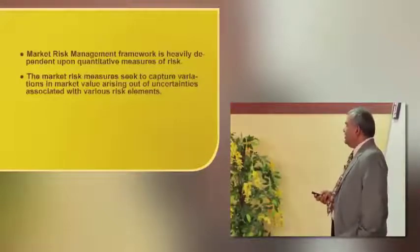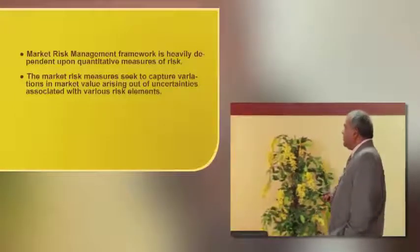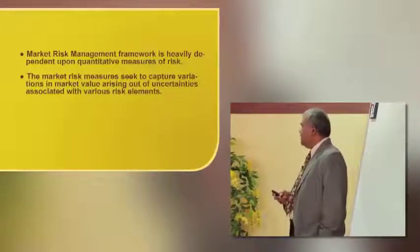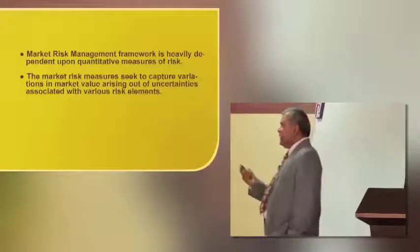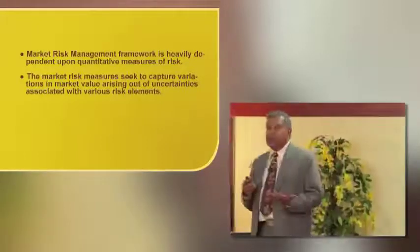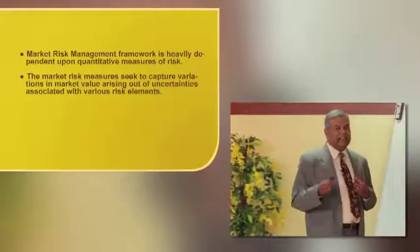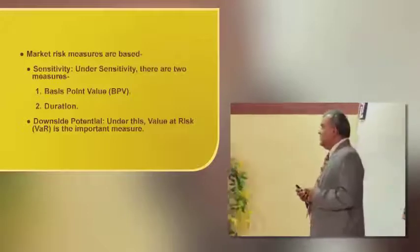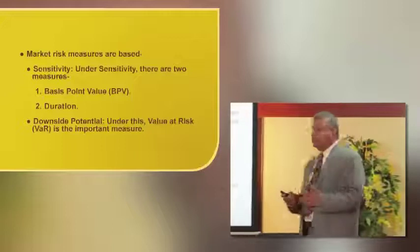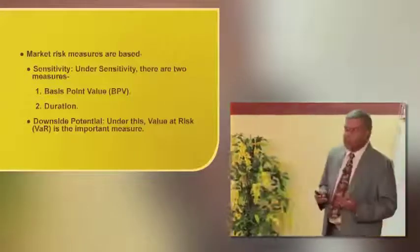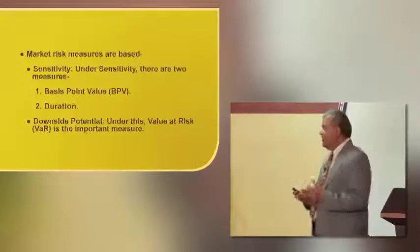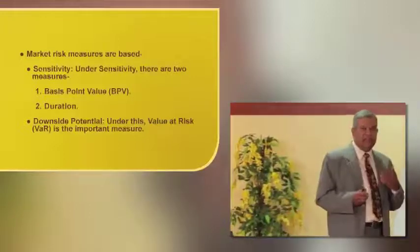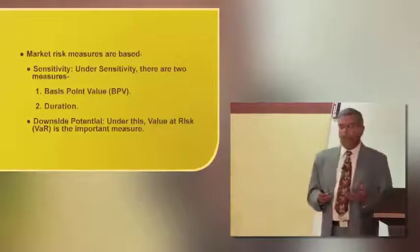The market risk measurement framework is heavily dependent on quantitative measures of risk and seeks to capture variation in market value arising from uncertainties associated with various risk elements. Interest rate risk, being part of market risk, can be measured through sensitivity measures. Under sensitivity, there are two measures: BPV (basis point value) and duration. The last measure is downside potential, i.e., value at risk. BPV and duration are applicable only for coupon-yielding instruments or bonds, while value at risk is applicable for all instruments including equities.